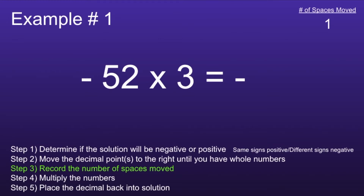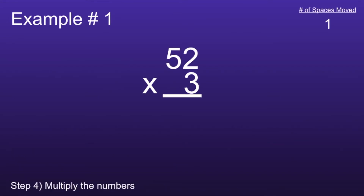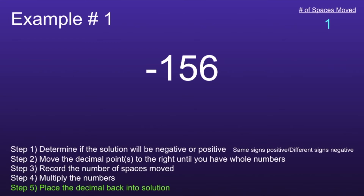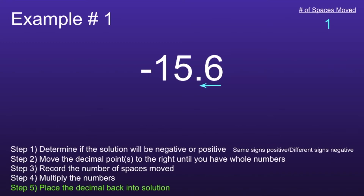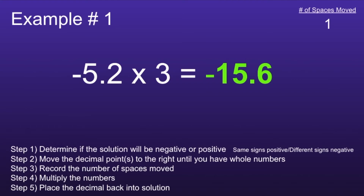This will move us onto Step 4: multiply the numbers. Notice I did not include the negative sign, because I already know the final answer will be negative. Now I can go ahead and multiply the numbers: 3 times 2 is equal to 6, and 3 times 5 is equal to 15. So 52 times 3 is equal to 156. This moves us onto the final step: place the decimal back into the solution. If you look at the top right, you can see the number of spaces moved was 1, because we moved the decimal point one space to the right. Now we want to do the opposite and move the decimal point one space to the left. So negative 156 becomes negative 15.6, and the final solution will be negative 15.6.